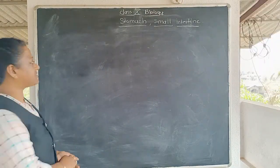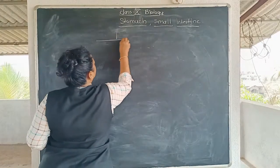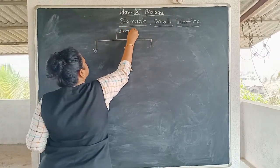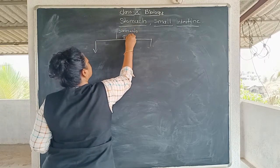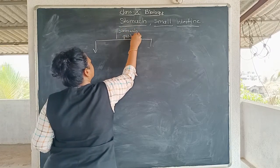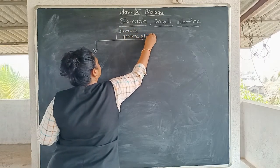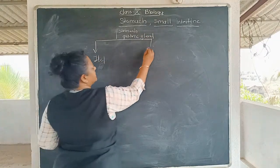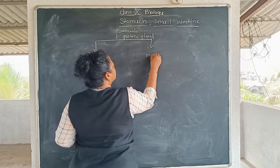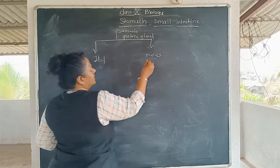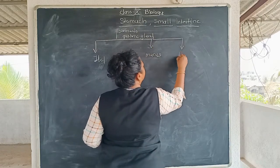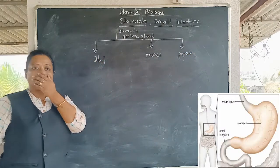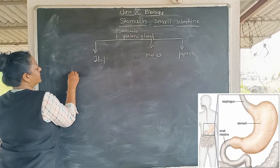What is secreted through the gastric glands? Three major things are secreted by the gastric glands of the stomach: HCl, mucus, and pepsin.